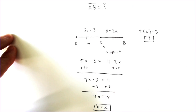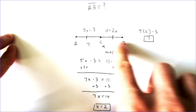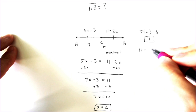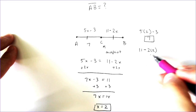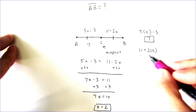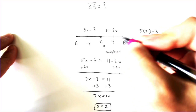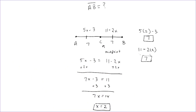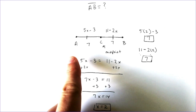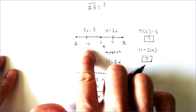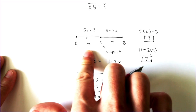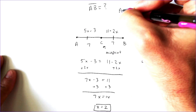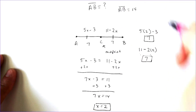If I plug in the same 2 for x in the other portion, C to B, I should also get 7 — so it's also a way of double-checking your work. 11 minus 2 times 2 would be 11 minus 4, which is also 7. So it is the midpoint; these two parts are equal to each other. If I wanted to find the length of A to B, I would either double the 7 or add 7 and 7 together, giving us AB equals 14.